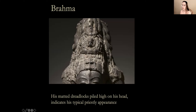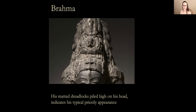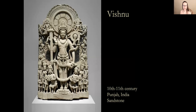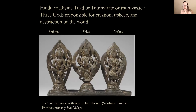Here is the detail of the dreadlocks, the matted hair, a beautiful crown, and stylized eyebrows. This Brahma is made of granite from the Chola dynasty — note we're no longer moving chronologically. This particular work is from the northwest frontier, the Swat Valley, in the Indus Valley civilization area, around the 9th century.